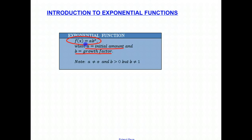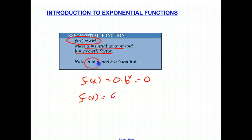Let's repeat that one more time. An exponential is always in the form of F of X equals AB to the X, where the initial amount is A and the growth factor is B. Now, the initial amount doesn't have to be one — it could be a different number: two, three, or four. It depends on what number you start with. A couple of caveats: A cannot be equal to zero, because if we had F of X equals zero times B to the X, you'd just get zero — so that would make no sense. And B must be a positive number, but B cannot be equal to one. Take a look at what would happen if B was equal to one. Let's say you had F of X equals A times one to the X.